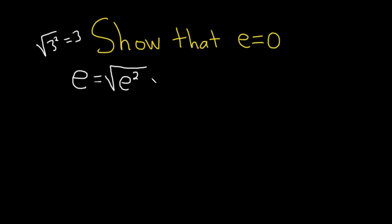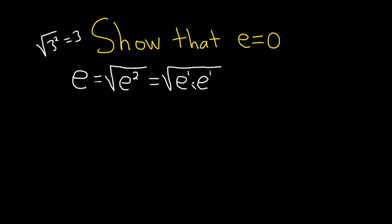So now what we're going to do is break this up in a really clever way. This is really the square root of e times e. That's okay because there's really a 1 here and a 1 here, and when you multiply these two numbers — because the bases are the same — you add the exponents: 1 plus 1 is equal to 2. So e times e is e squared. No issues there.